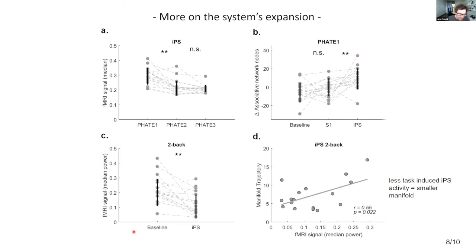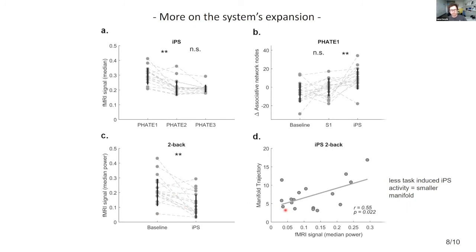Looking at what cTBS does on IPS — and this is always a challenging analysis given the variability in these protocols — we were quite fortunate in that compared to baseline, cTBS seems to induce a reduction in fMRI signal, measured as power of the BOLD signal, in pretty much all participants: 15 of 17 except two who showed an opposite effect. We found that this reduction in magnitude of activity at the local level is linearly related to the manifold trajectory — there is a linear relationship between local activity change and the whole-system level response.